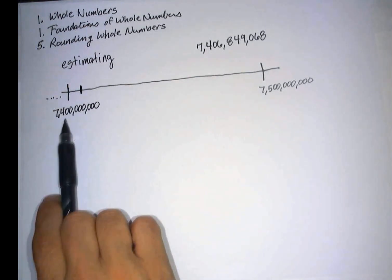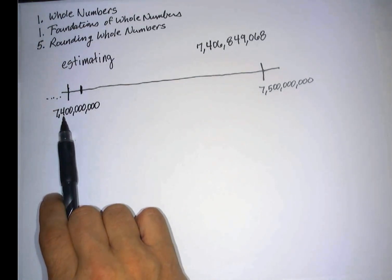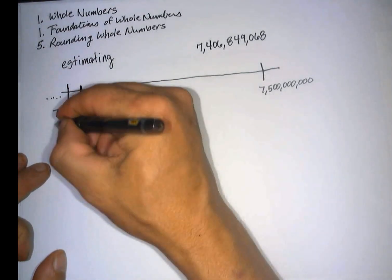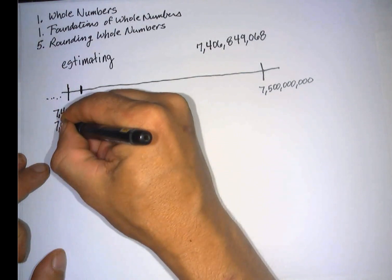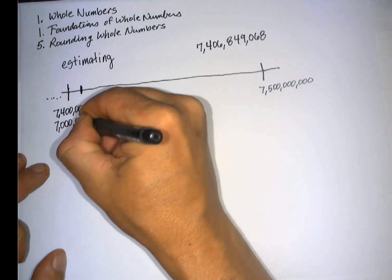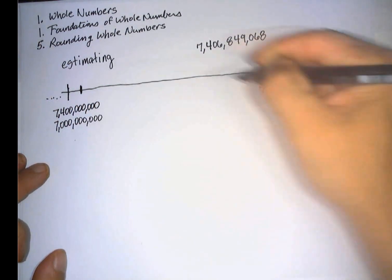Or you could say that maybe this is 7 billion, 7,000,000,000, and this is 8 billion, 8,000,000,000.